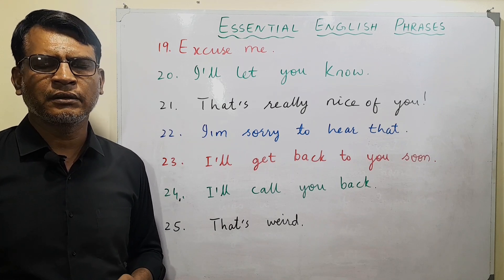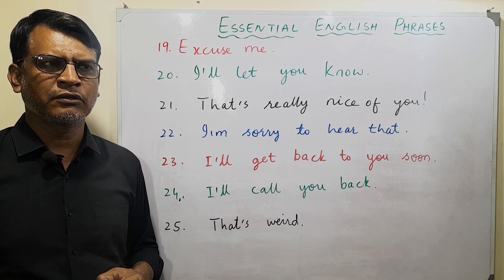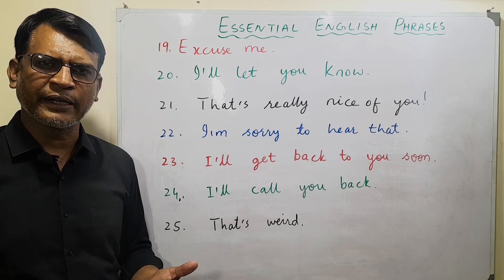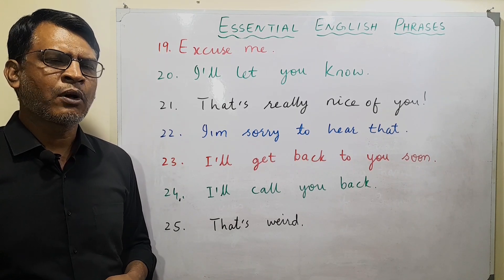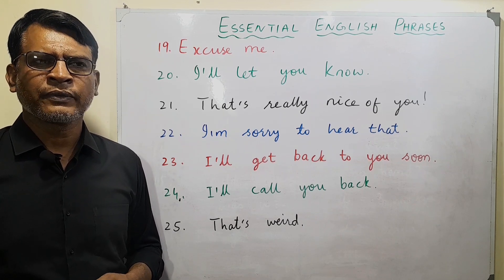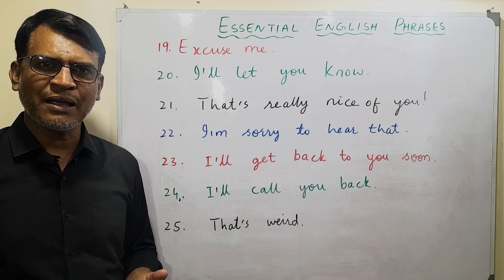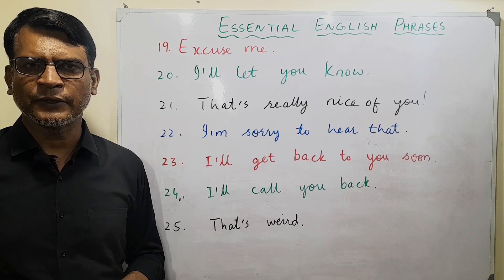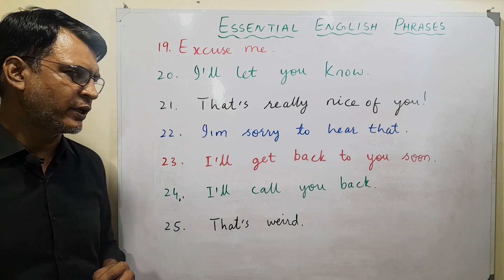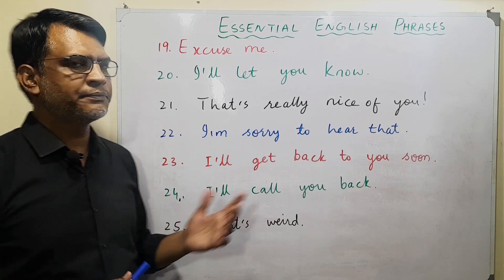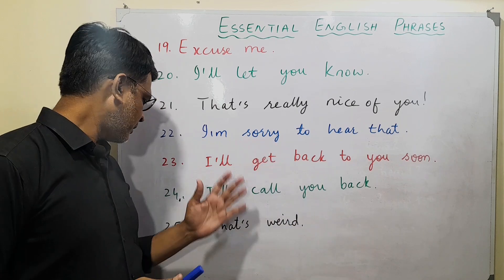'That's weird' — for instance, you heard that Sam has fallen off his motorbike and you say 'That's weird because he's a very good rider.' Or Anna has failed in the exam and then you say 'That's weird because generally she passes and she's a very good student.' Okay, this is it — we've covered 25 essential English phrases.